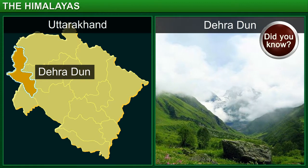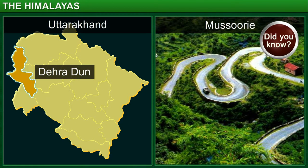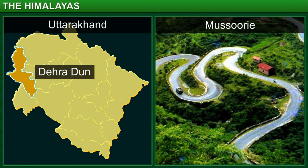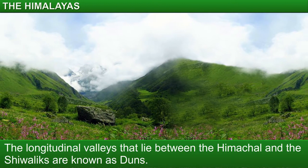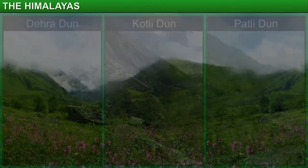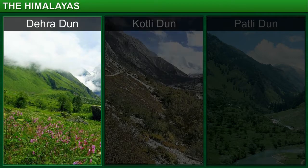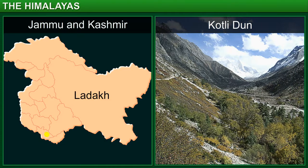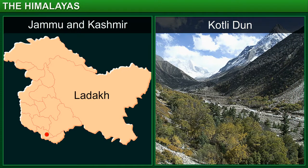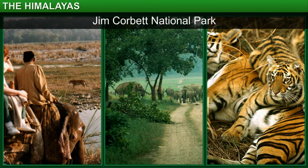You may have heard of Dehradun. The famous hill station of Mussoorie is located in the Dehradun valley in the state of Uttarakhand. The longitudinal valleys that lie between the Himachal and the Shivaliks are known as Doons. That's how the most famous valleys including Dehradun, Kotlidun and Patlidun got their names. Kotlidun is located in the Jammu region and is known for its scenic beauty. The Jim Corbett National Park is located in the Patlidun region.